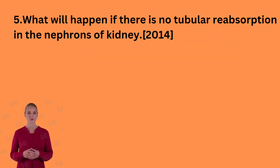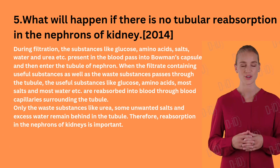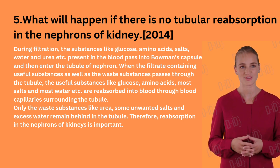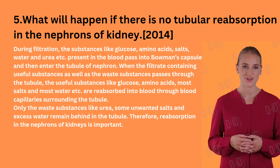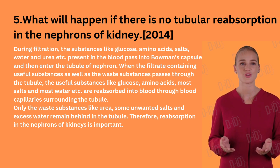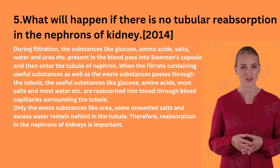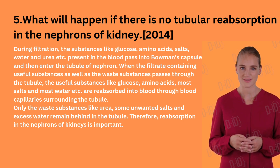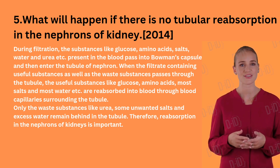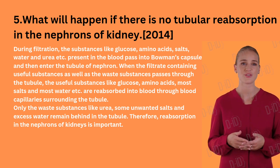What will happen if there is no tubular reabsorption in the nephrons of the kidney? During filtration, substances like glucose, amino acids, salts, water, and urea present in the blood pass into Bowman's capsule and then enter the tubule of the nephron. When the filtrate containing useful substances as well as waste substances passes through the tubule, the useful substances like glucose, amino acids, most salts, and most water are reabsorbed into blood through the blood capillaries surrounding the tubule. Only the waste substances like urea, some unwanted salts, and excess water remain behind in the tubule. Therefore, reabsorption in the nephrons of the kidneys is important.